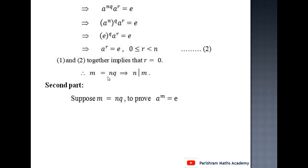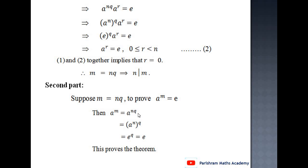Converse: suppose m = nQ; we must prove a raised to m equals the identity element. Now a raised to m equals a raised to nQ, which equals (a raised to n) raised to Q. But a raised to n equals the identity element, so this equals e raised to Q, which equals e. Therefore a raised to m equals the identity element, proving the result.